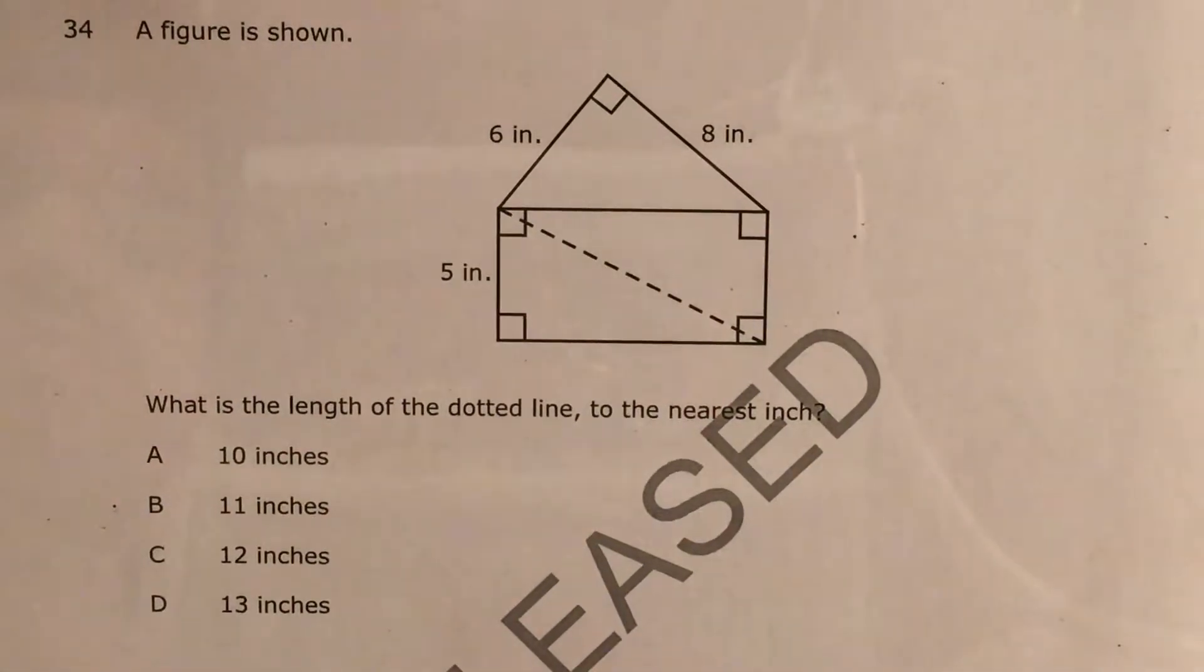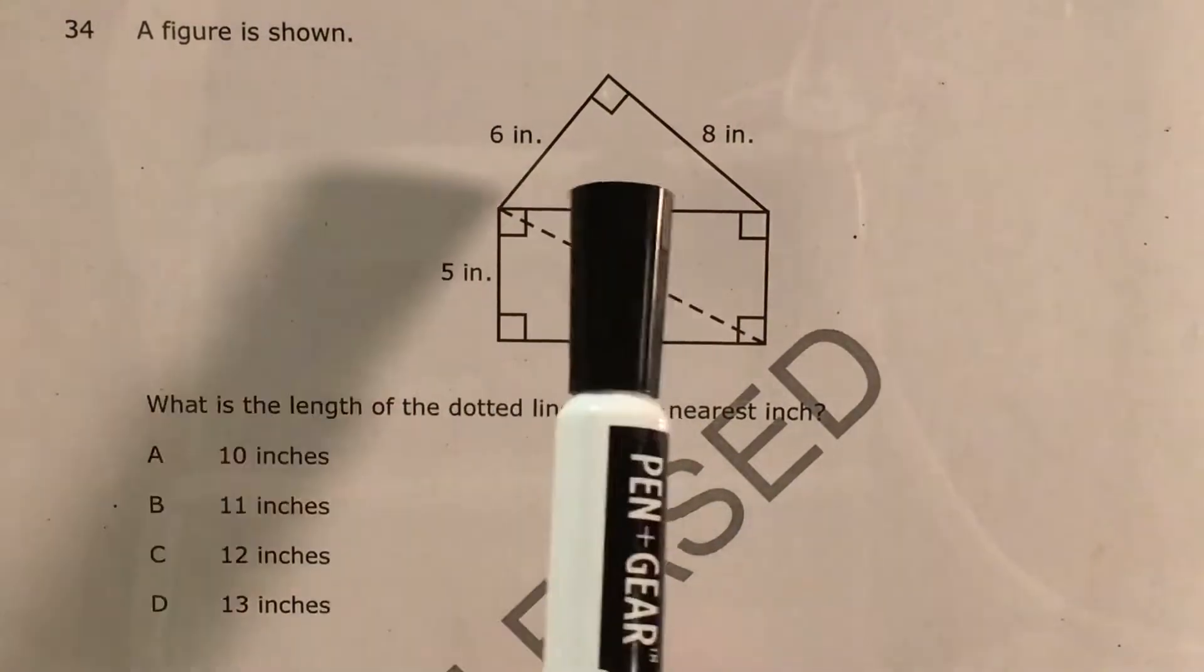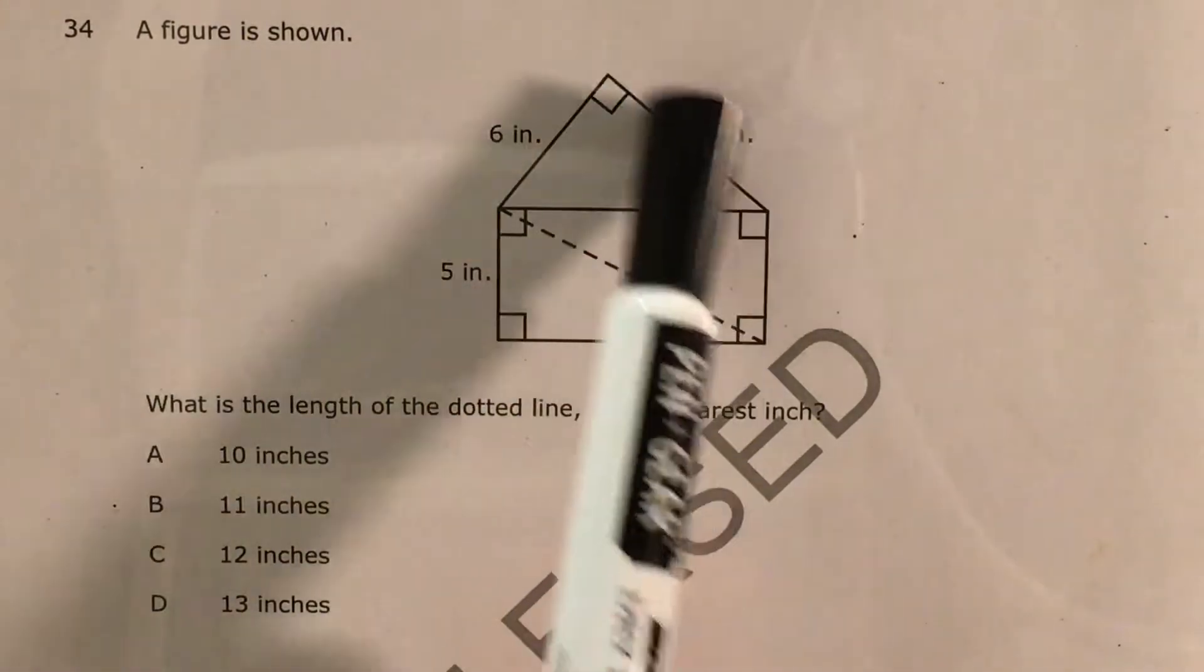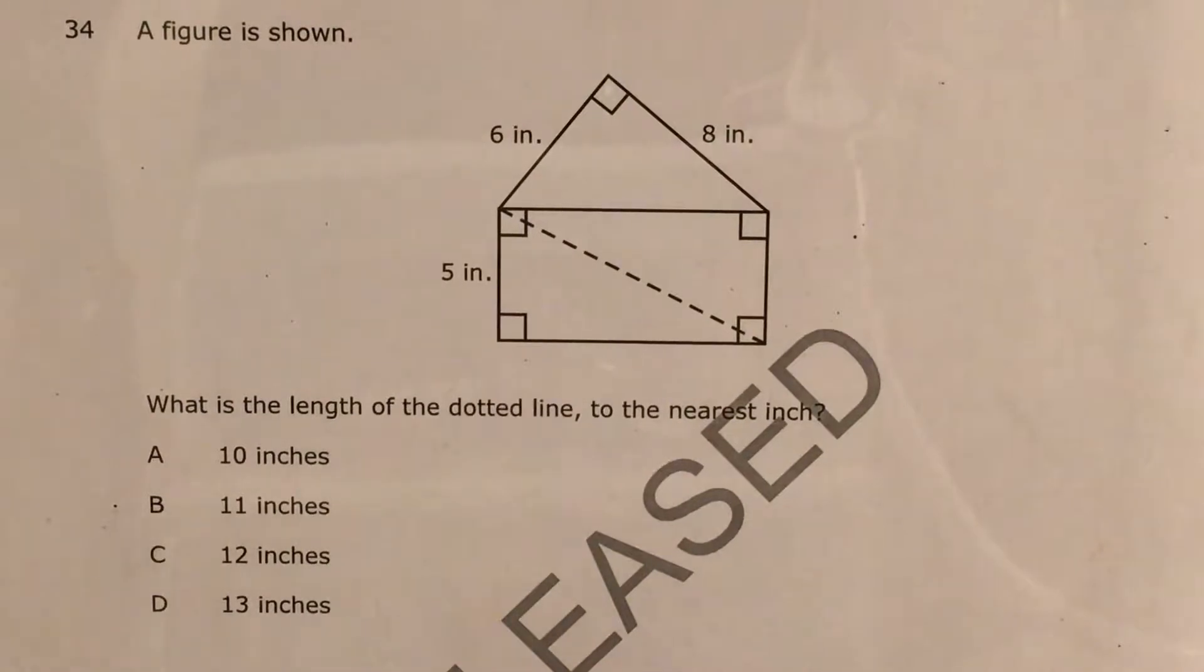The question shows us this weird-looking figure that looks a bit like a wonky house. We know that this side is 6 inches, this side is 8 inches, and this side is 5 inches, and we're supposed to find the length of this dotted line to the nearest inch.